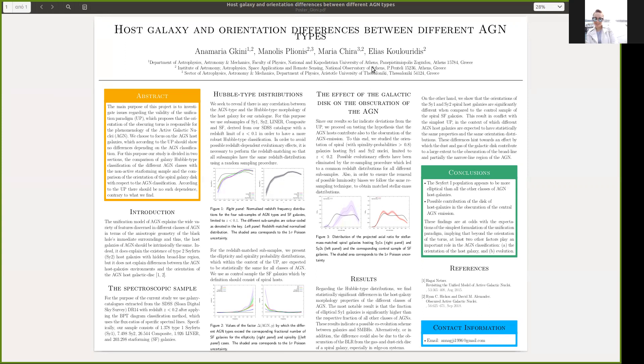In order to interpret these results, let us assume that there is a statistical co-alignment of the torus and the galactic disk. Indeed, this scenario can explain the fact that the Seyfert-1 galaxies have more frequently face-on host galaxies compared to the control sample.